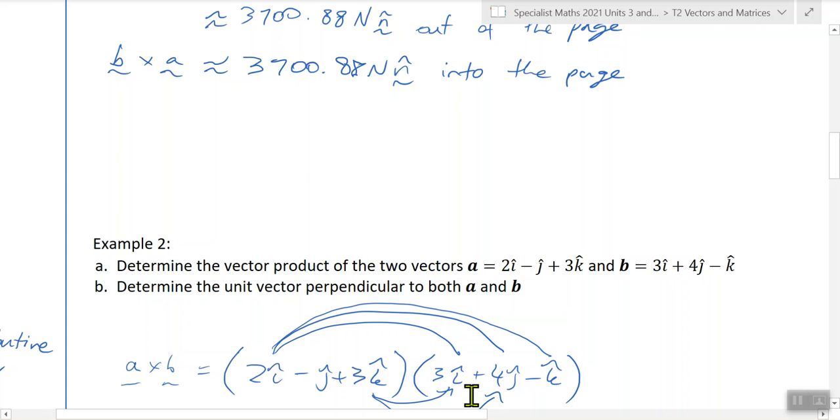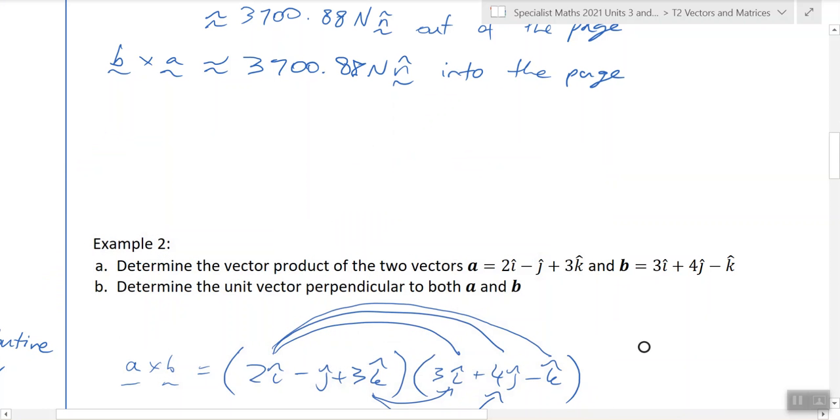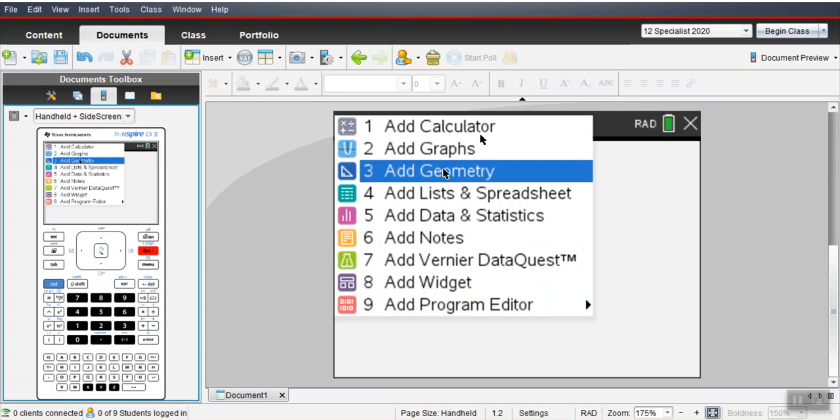I'm going to show you how to use a calculator for this question. We just did it manually. So you've got the two vectors. We want to find the vector product of those two vectors. So open up your calculator, add calculator, or open up a new document.